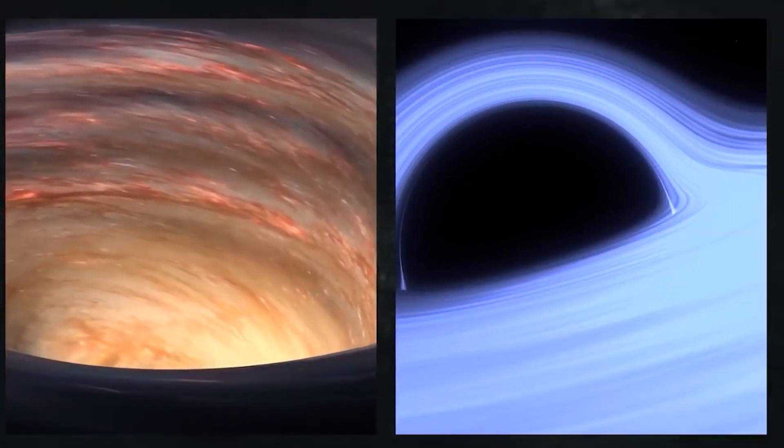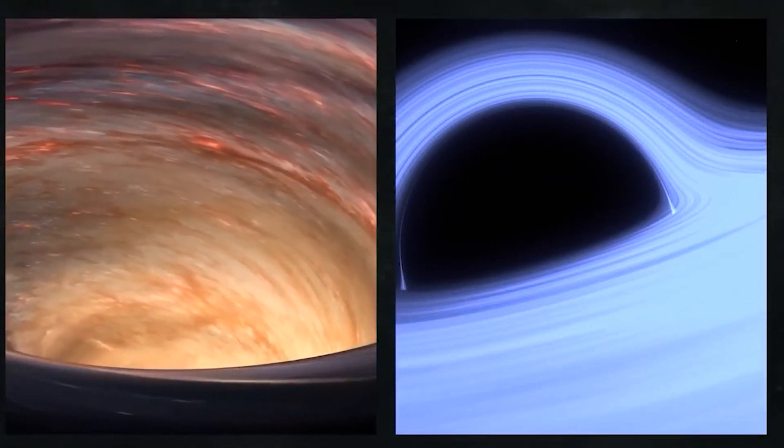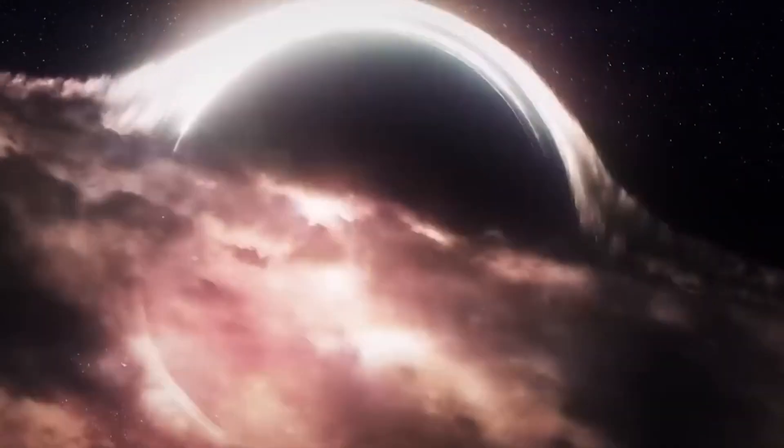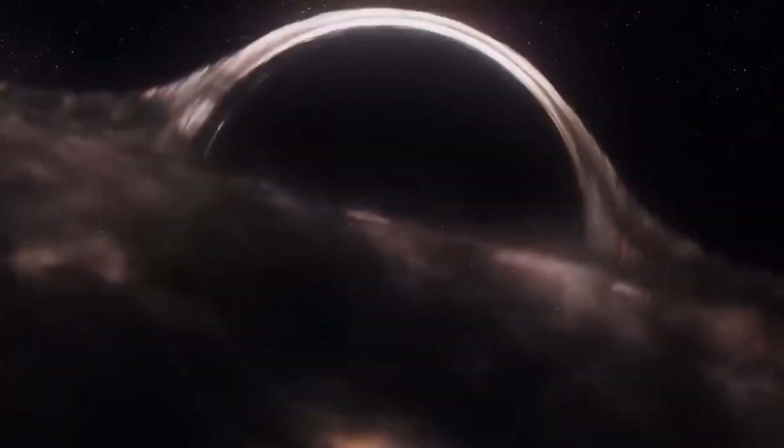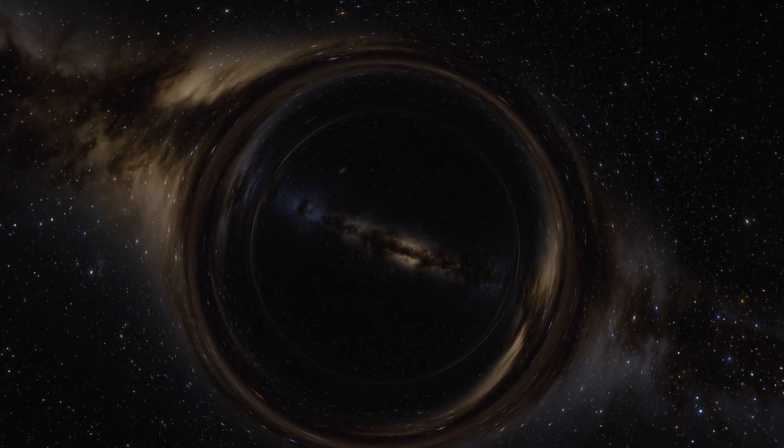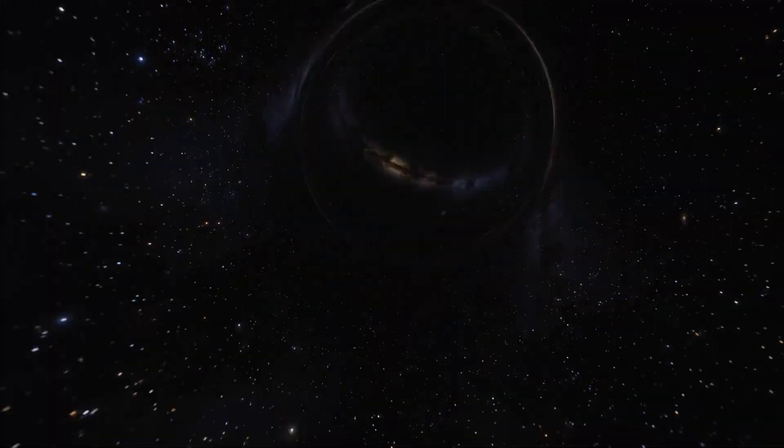The singularity is the core of the black hole, where most of its mass is concentrated. It's an incredibly dense and tiny point. But here's the thing: nothing, not even light, can escape its gravitational pull. That's why black holes are called black. They don't emit any light. They turn everything they encounter into nothingness.